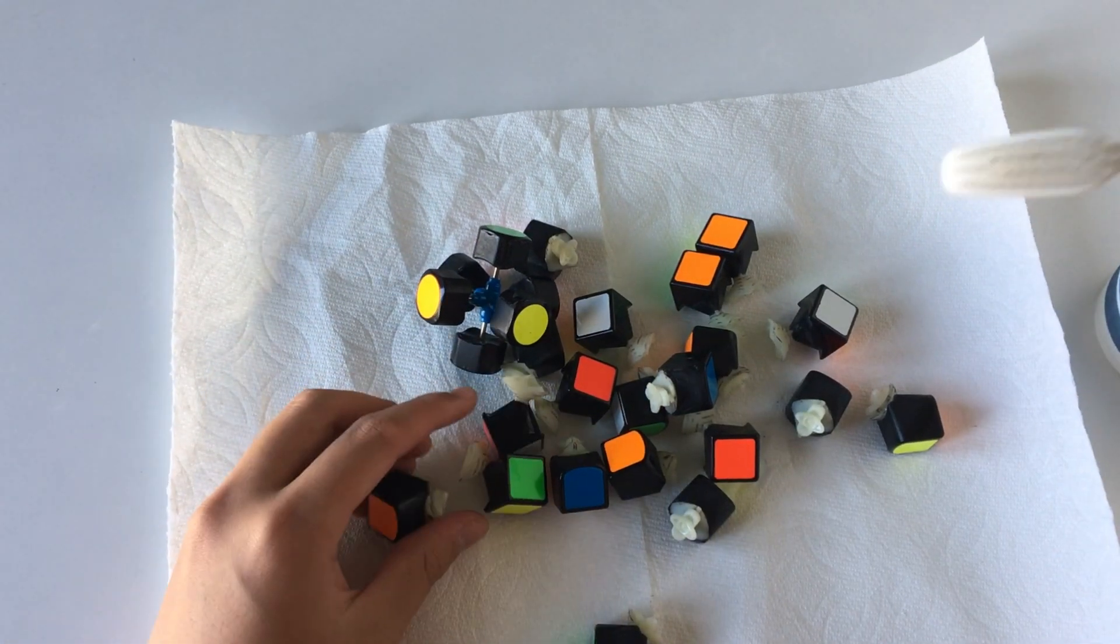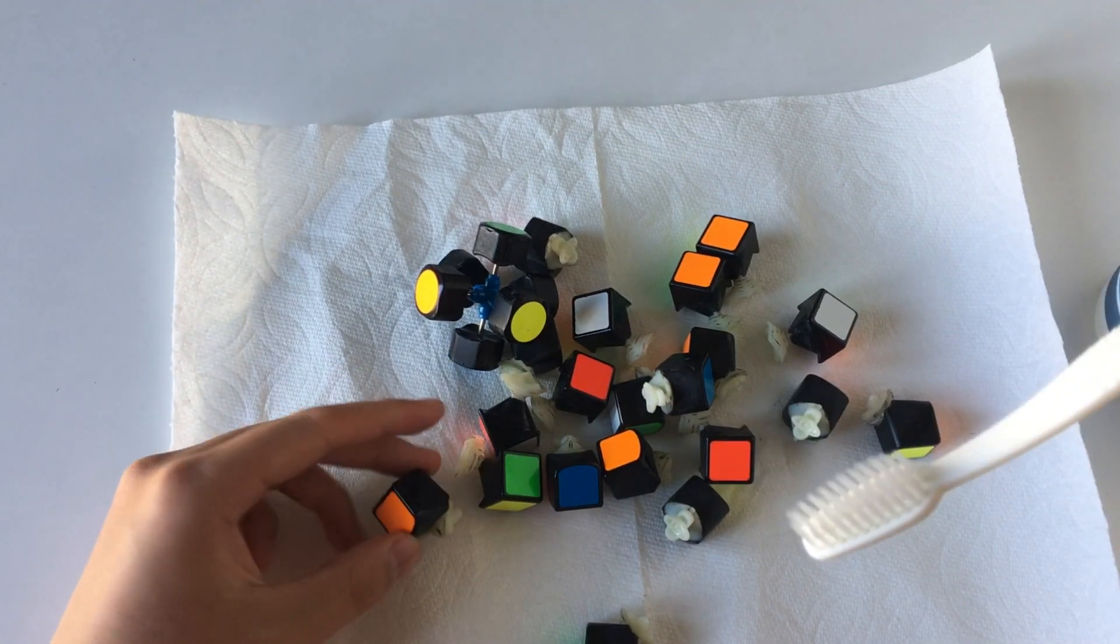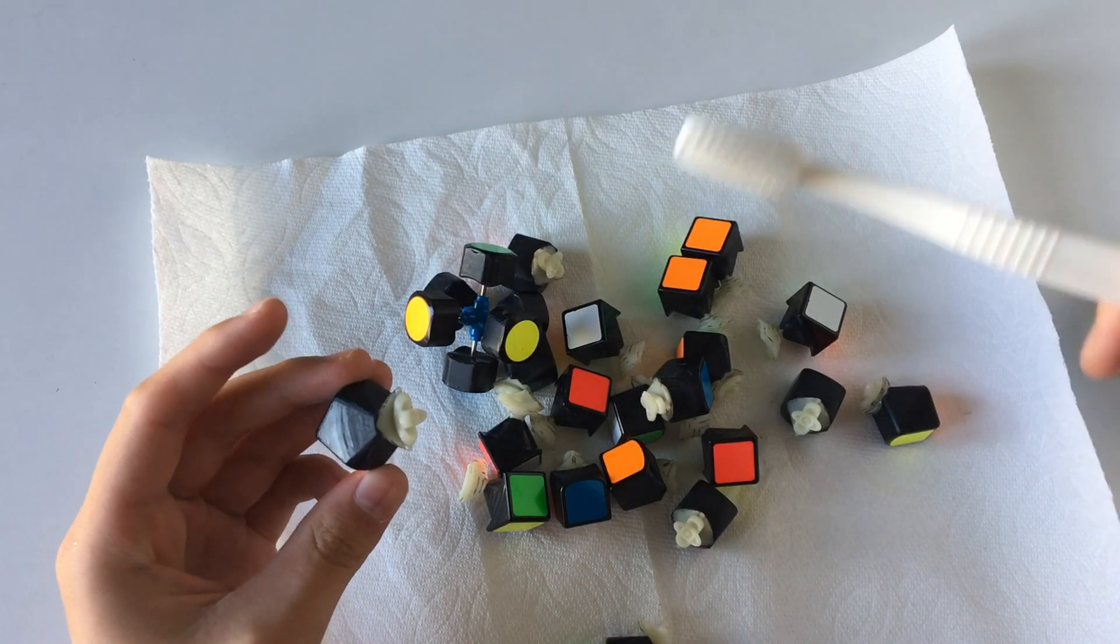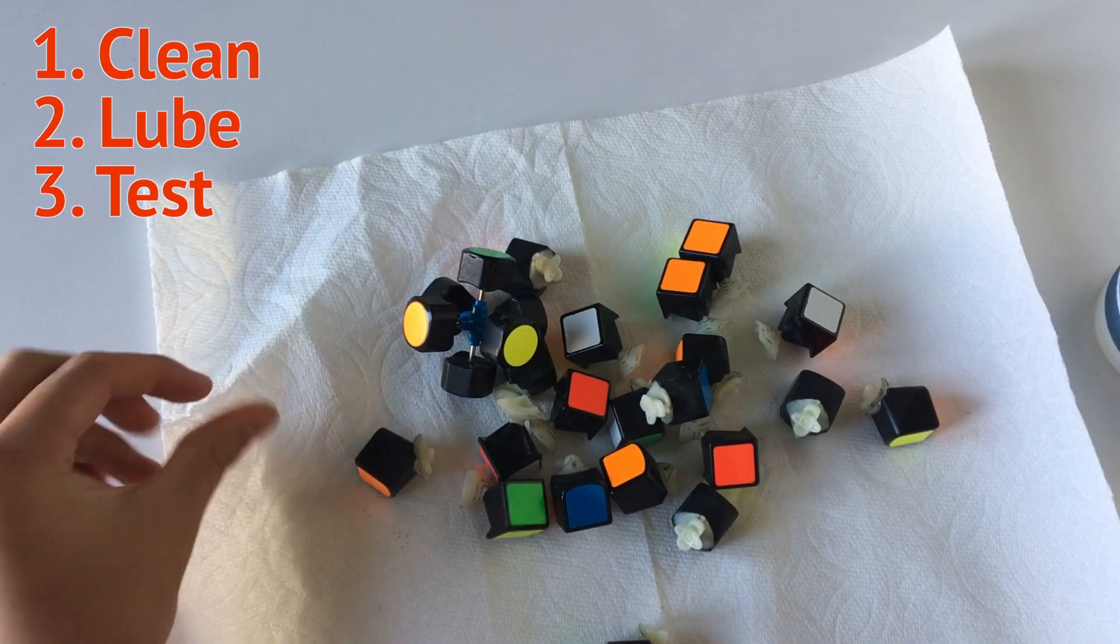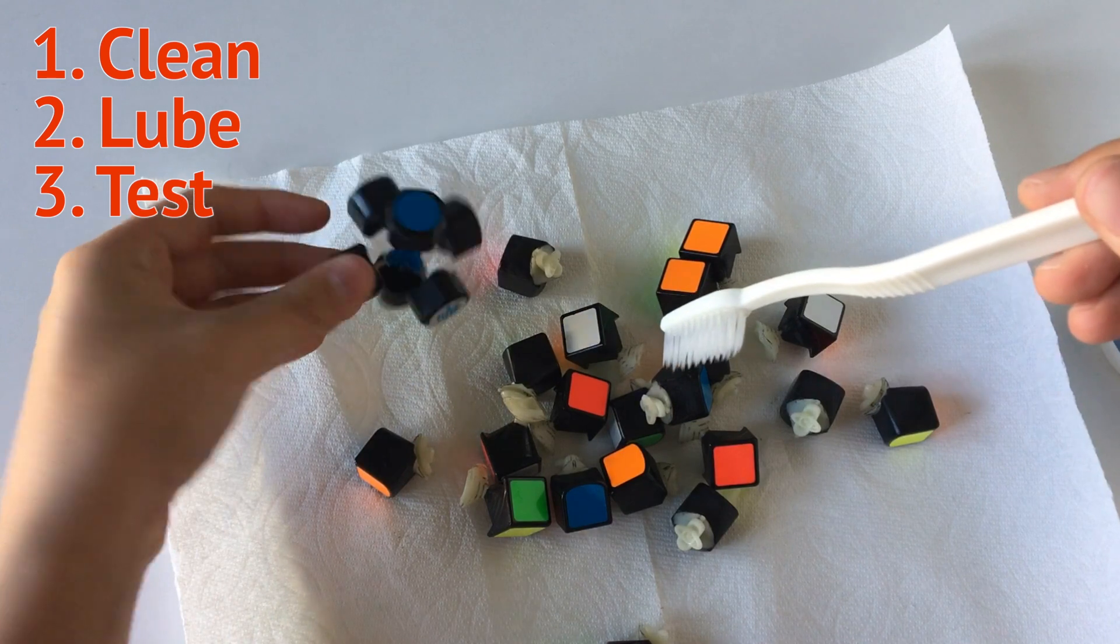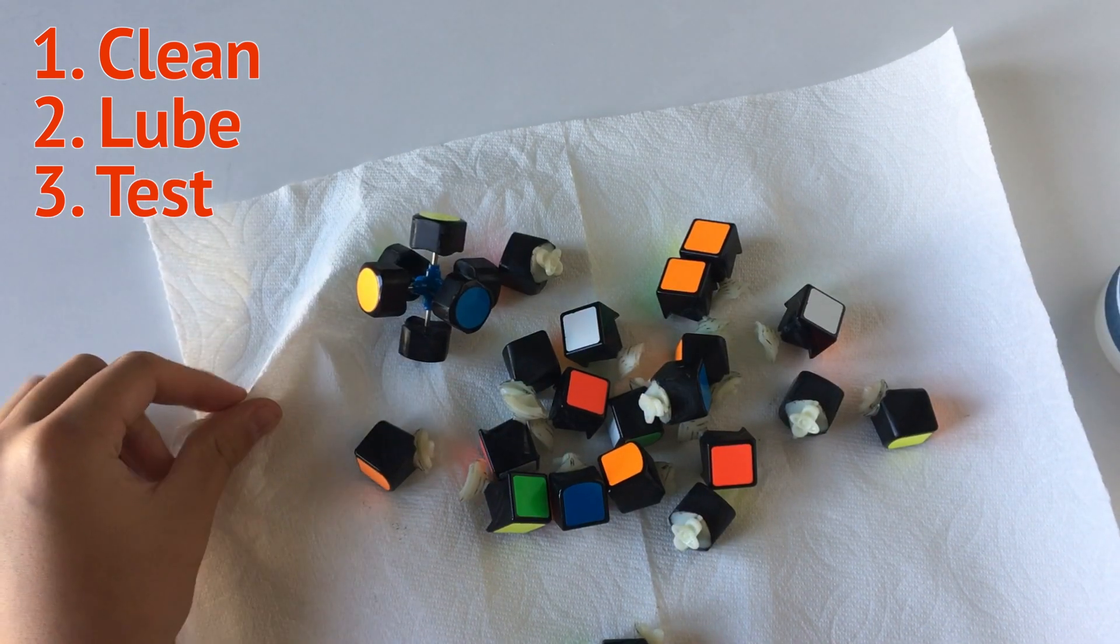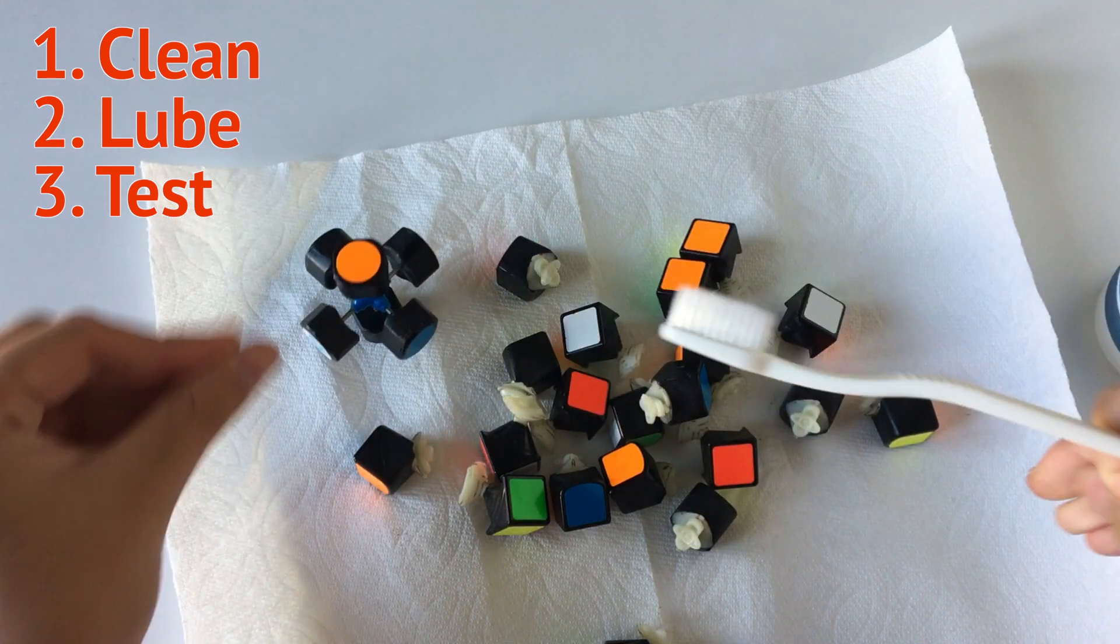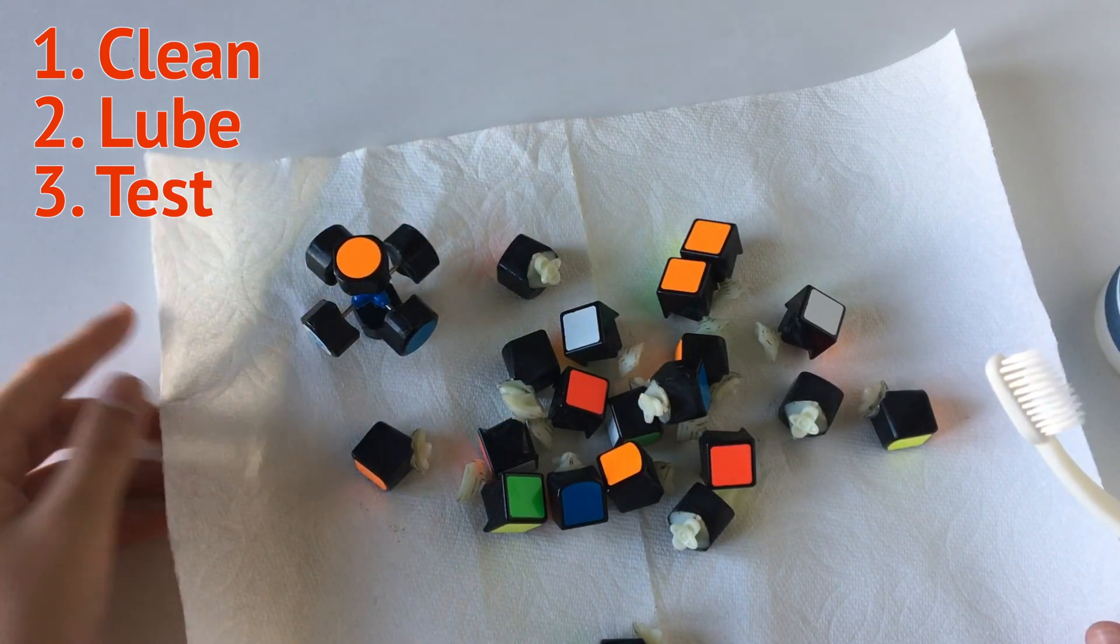Okay, this is the steps that I'm going to do for this cube. First, I will be cleaning everything with the toothbrush with water, and then I'm going to clean the core and then probably lubricate the core, and then last I will be putting it back and lubricating all the pieces.